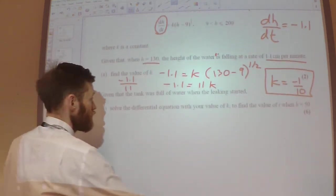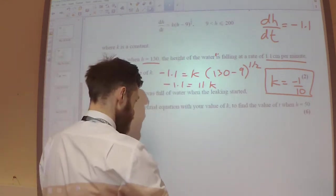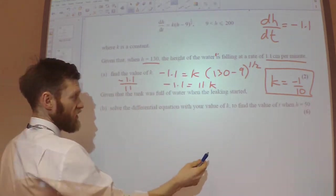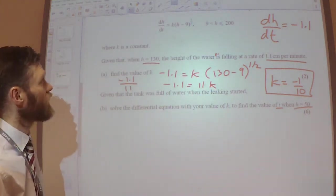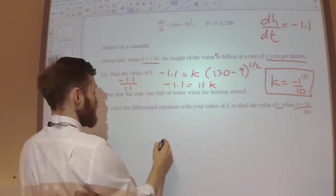Moving on to part B. We want to solve the differential equation so that we can find the value of T when H is 50. Okay, so separation of variables.